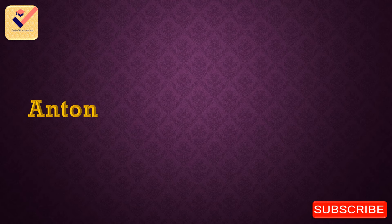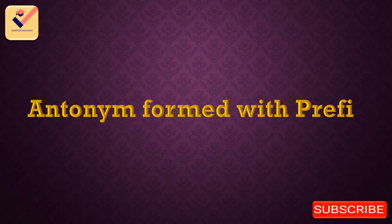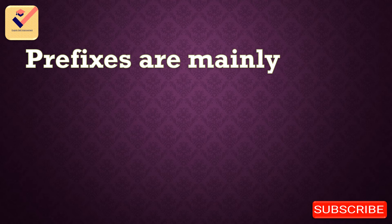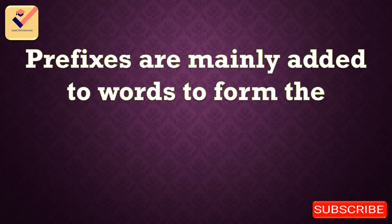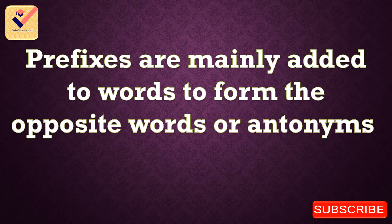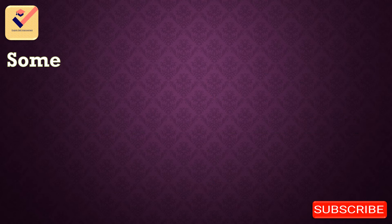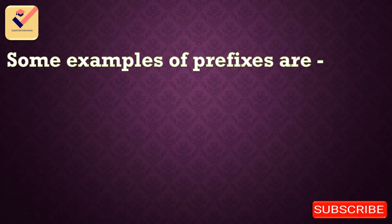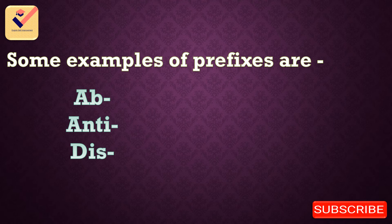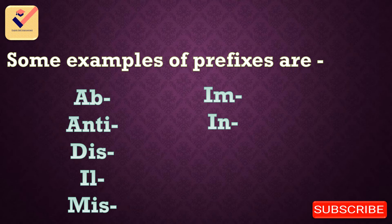Antonyms formed with prefix. Prefixes are mainly added to words to form the opposite words or antonyms. For example, unable. Some examples of prefixes are: ab, anti, dis, ill, mis, im, in, un, ir.